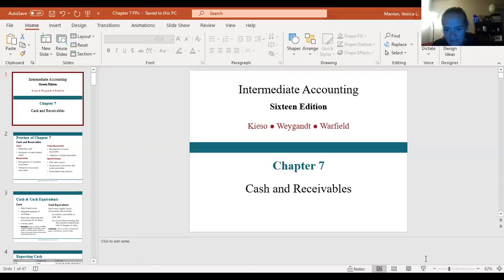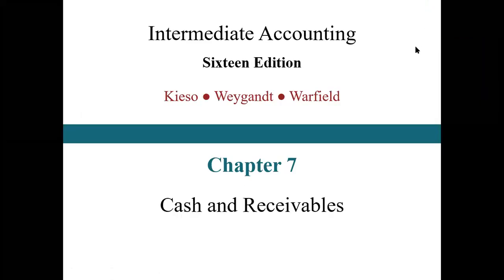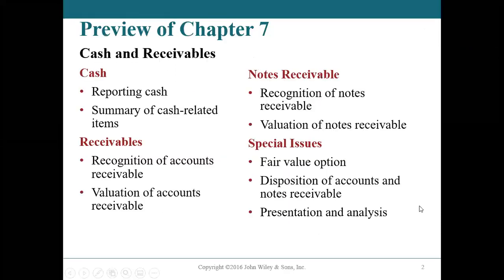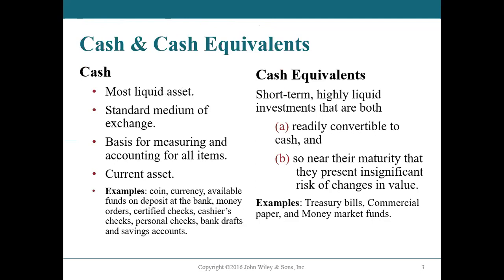I'm going to share my screen and get this PowerPoint pulled up. So hopefully we're seeing the intermediate accounting PowerPoint slides now. Chapter 7, we're getting into cash and receivables — what is considered cash, what is considered cash equivalents, and then receivables: how we recognize and value accounts receivables, recognition and valuation of notes receivable, a few special issues associated with these assets, the fair value option, disposition of accounts and notes receivable, and then presentation and analysis.